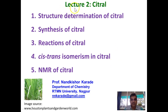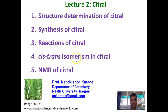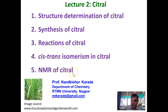Welcome to the second lecture on terpenes and terpenoids. In this lecture we are going to discuss the chemistry of the citral molecule. We will see the structure determination, synthesis, and reactions of citral. There are two isomers — geranial and neral — which exist in cis and trans isomerism. We will see how these two can be differentiated on the basis of NMR spectroscopy, and at the end we will also discuss the NMR spectrum of the citral molecule.